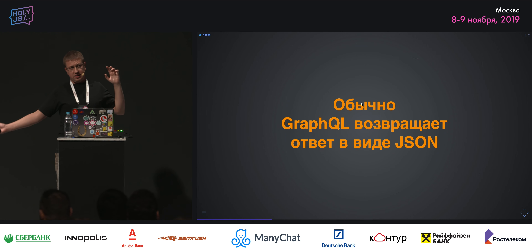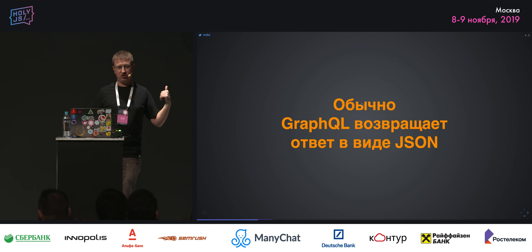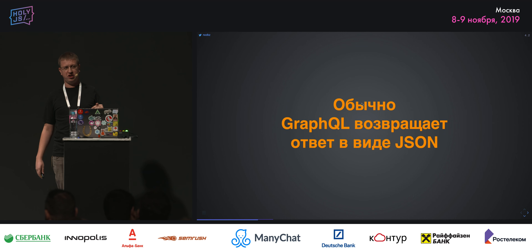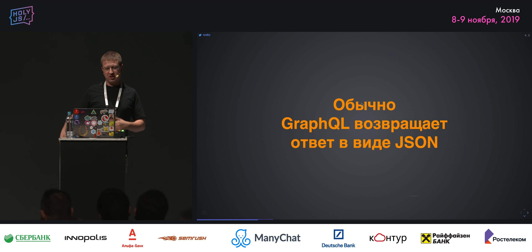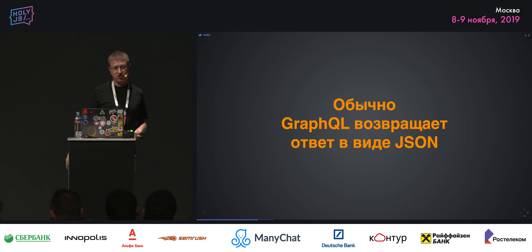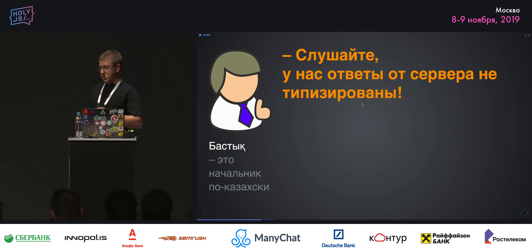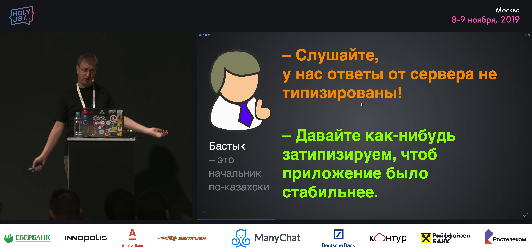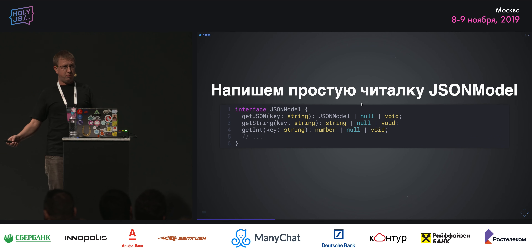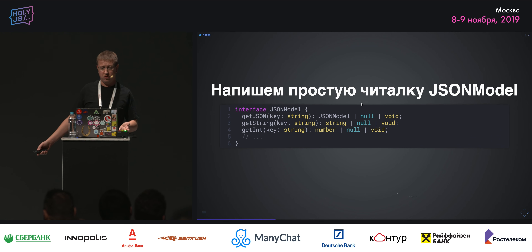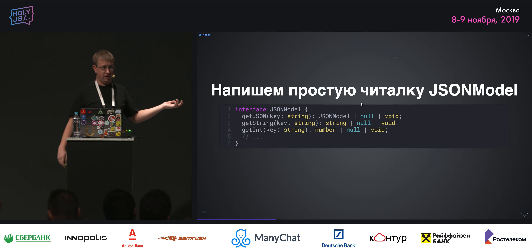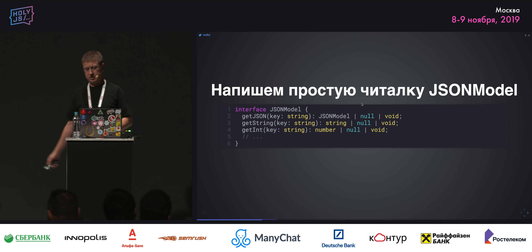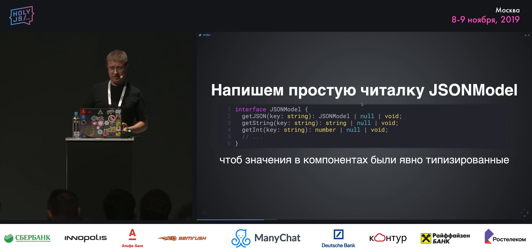Что такое JSON-модели? GraphQL-сервер обычно возвращает ответы в JSON. Начальник говорит: ребята, ответы приходят в JSON и они не типизированы — давайте затипизируем, и приложение станет стабильным. Самый простой подход — написать некую читалку, JSON-модель, у которой есть методы: дай мне string, дай мне int, дай мне такой-то тип, чтобы возвращались конкретные типы — string, число, boolean. Чтобы значения в наших компонентах были явно типизированы.